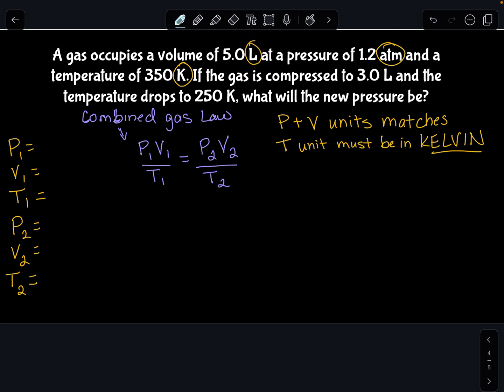So it says a gas occupies five liters, so that's my V1, at a pressure of 1.2 ATM, and a temperature of 350K. So look, I just filled out P1, V1, T1.